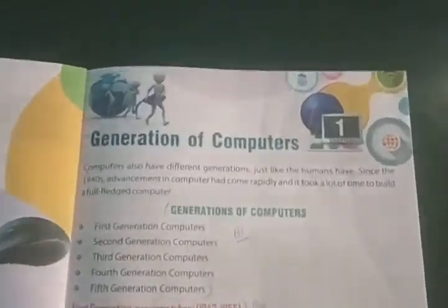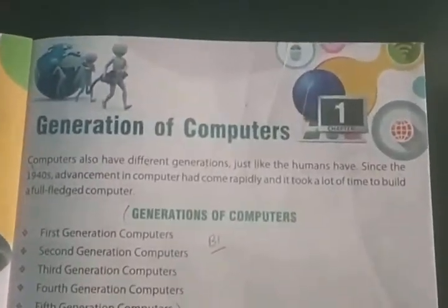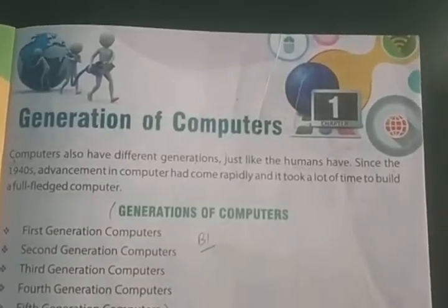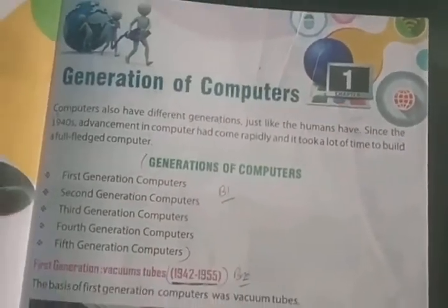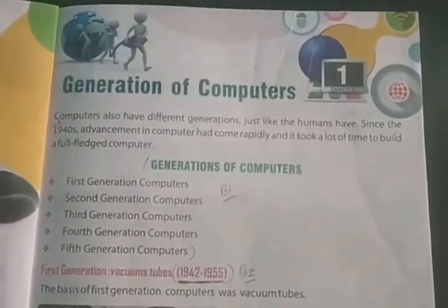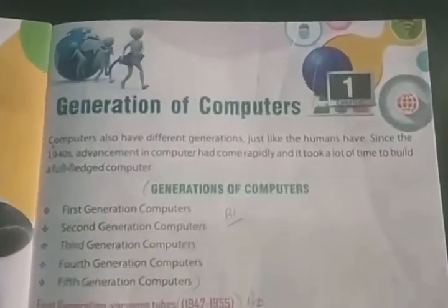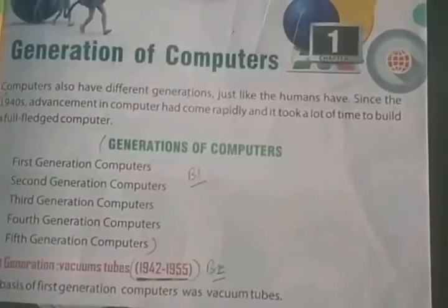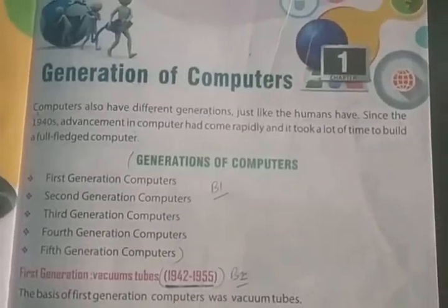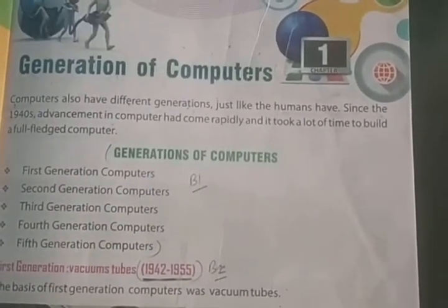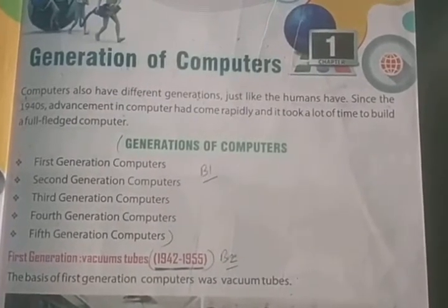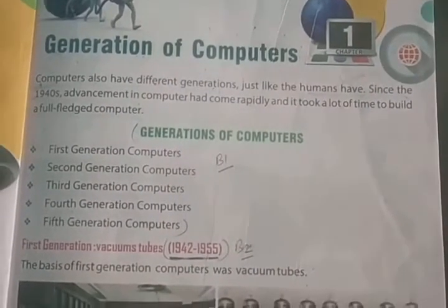Class 5, Chapter 1: Generation of Computers. Let's talk about the generations of computers. Just like humans have different generations, computers also have different generations. Since the 1940s, advancement in computers came rapidly and it took a long time to build a full-fledged computer.